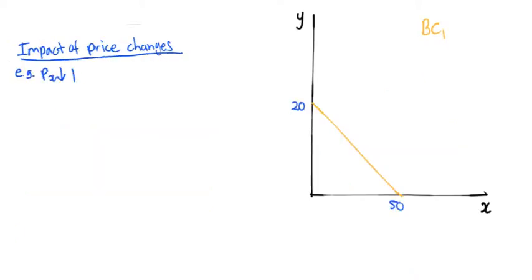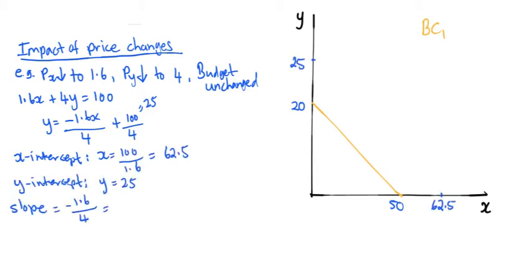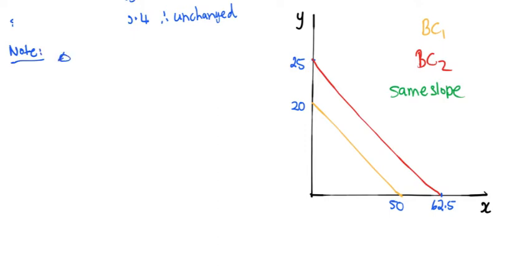Now let's assume the price of X reduces from $2 to $1.60. And the price of Y reduces from $5 to $4. The budget remains at $100. The equation becomes 1.6X plus 4Y equals 100. Solving for Y, we get negative 1.6X divided by 4 plus 25. In this case, the x-intercept is 62.5 and the y-intercept is 25. The slope however, has actually not changed. It's still negative 0.4. Similar to how income increases affect the budget line, here we also see a parallel shift outwards.